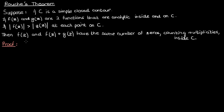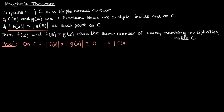We'll begin the proof by considering the modulus of g on the closed contour C. Because of the definition of the modulus of a complex number, the modulus of g must be greater than or equal to 0 — it's a magnitude, it obviously can't be negative. Now because the modulus of f is greater than the modulus of g on the curve C according to the theorem, we can add this additional inequality to the front of this expression. The implication is that the modulus of f is greater than 0 on the curve C, which means that f is non-zero on the curve C. It has no zeros, because the modulus of zero would be zero.